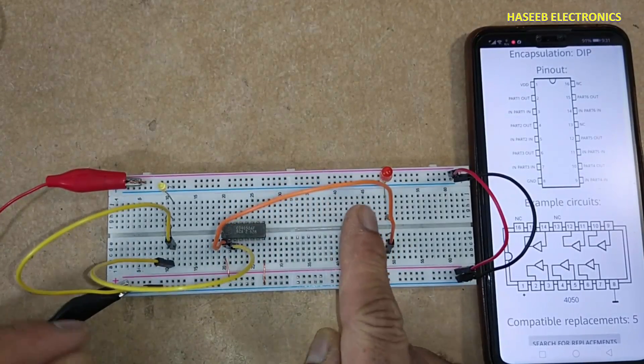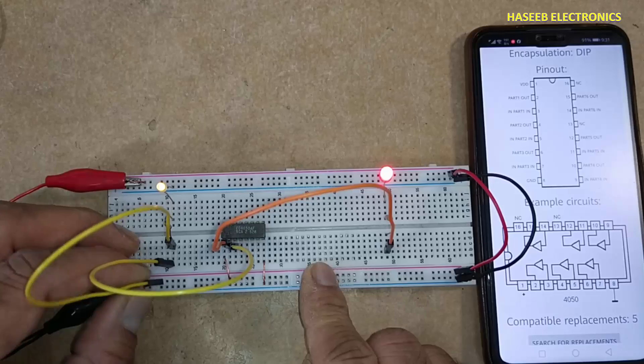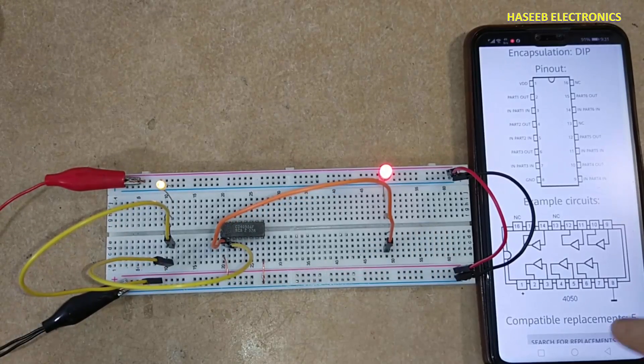Input low, output low. Input high, output high. This is the first buffer.